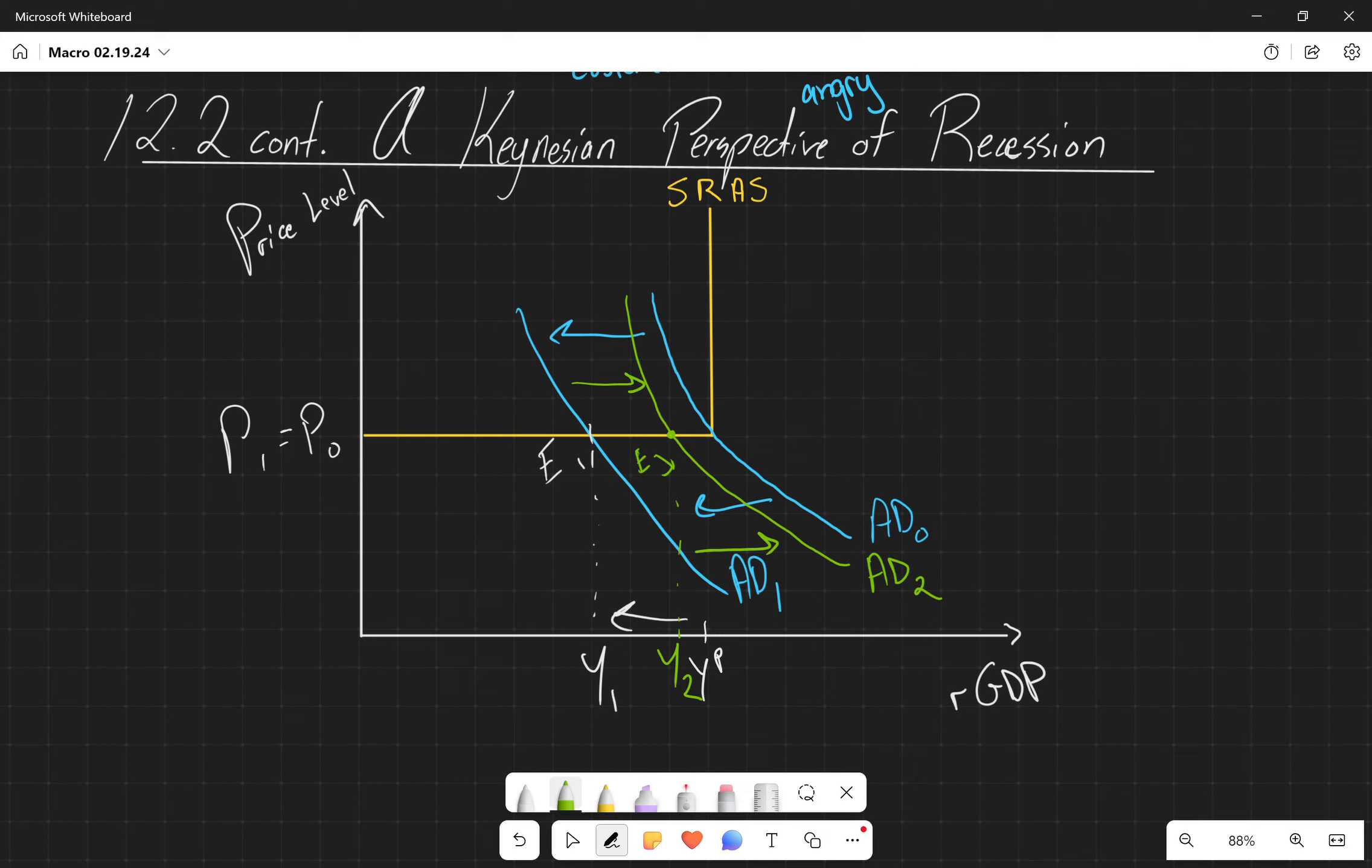So this brings everything together of chapter 12. When the intersection occurs at the flat portion of the short run aggregate supply curve, then that means there's only been a change in our real GDP. If the intersection occurs in the vertical portion of the short run aggregate supply, then that means there's only going to be a change in the price level.